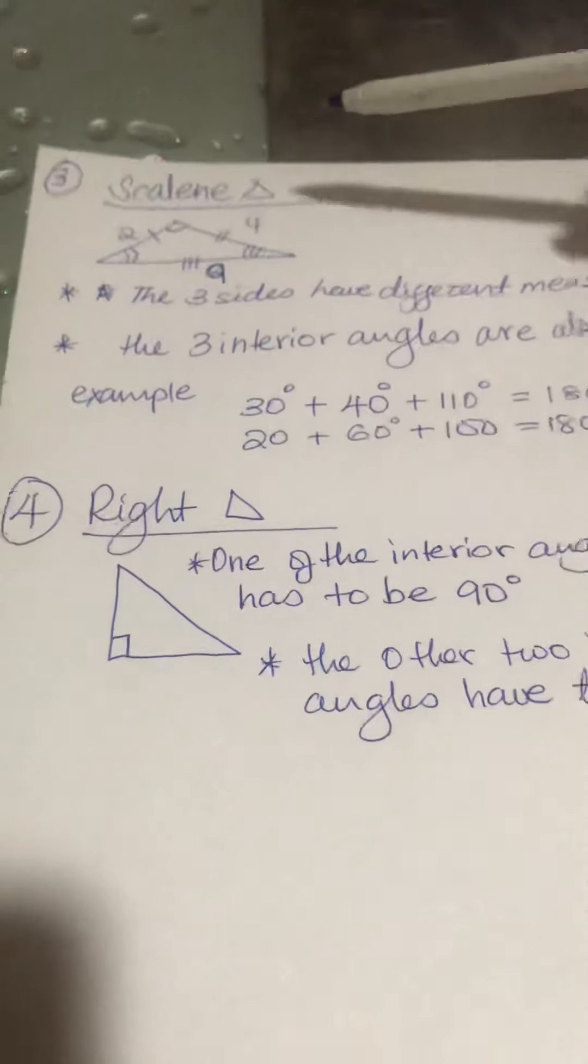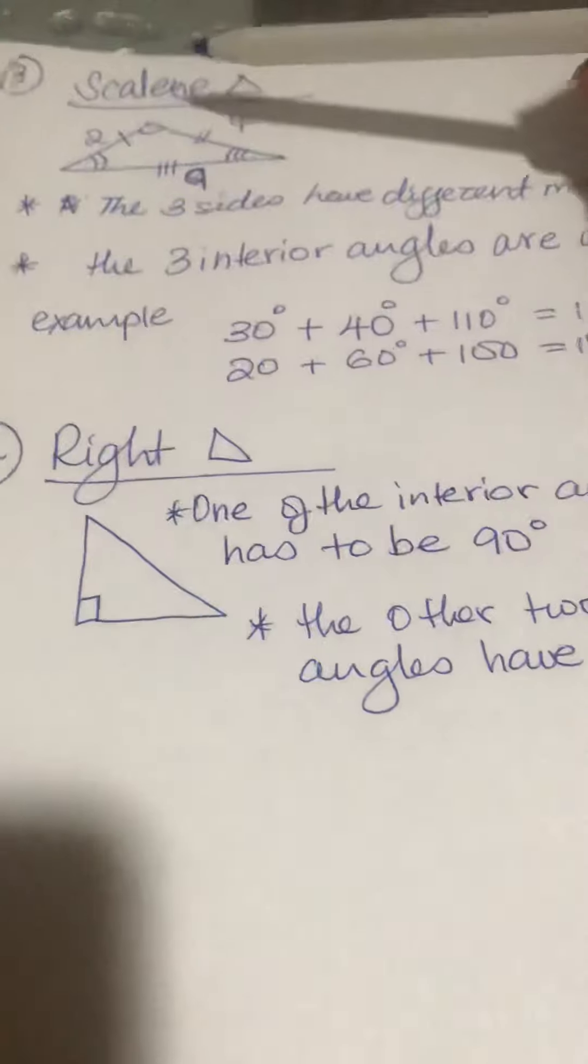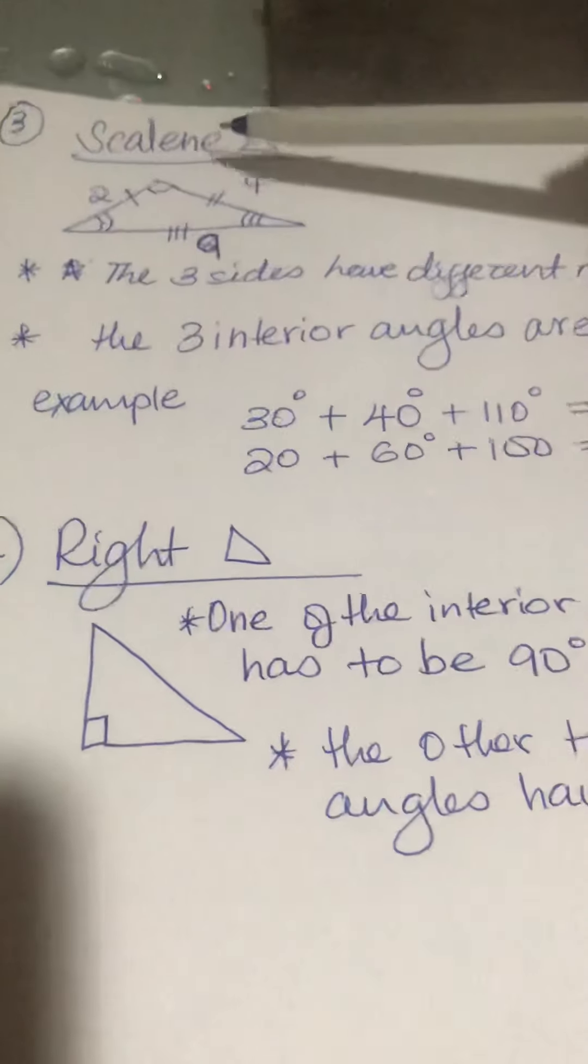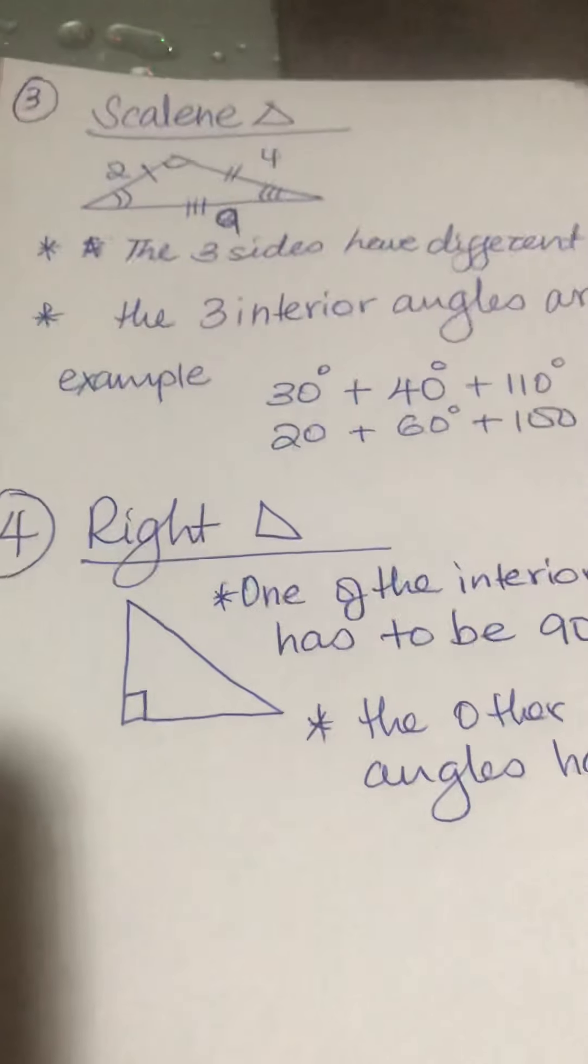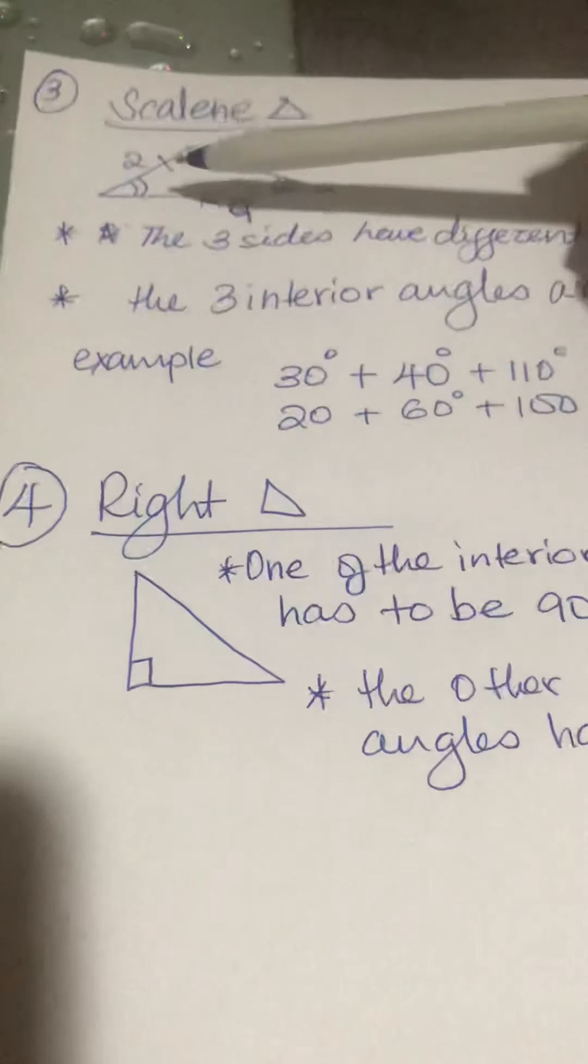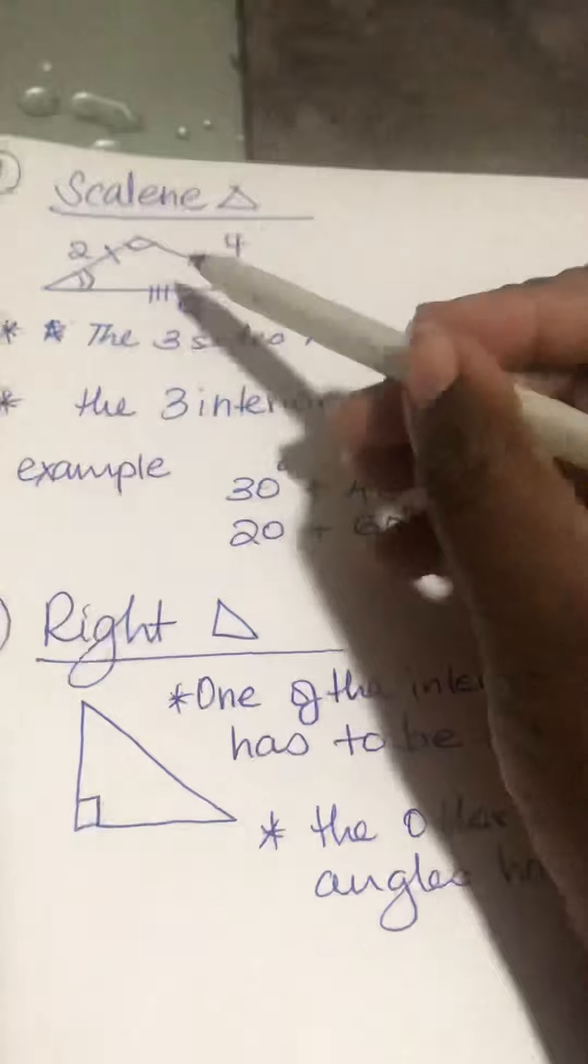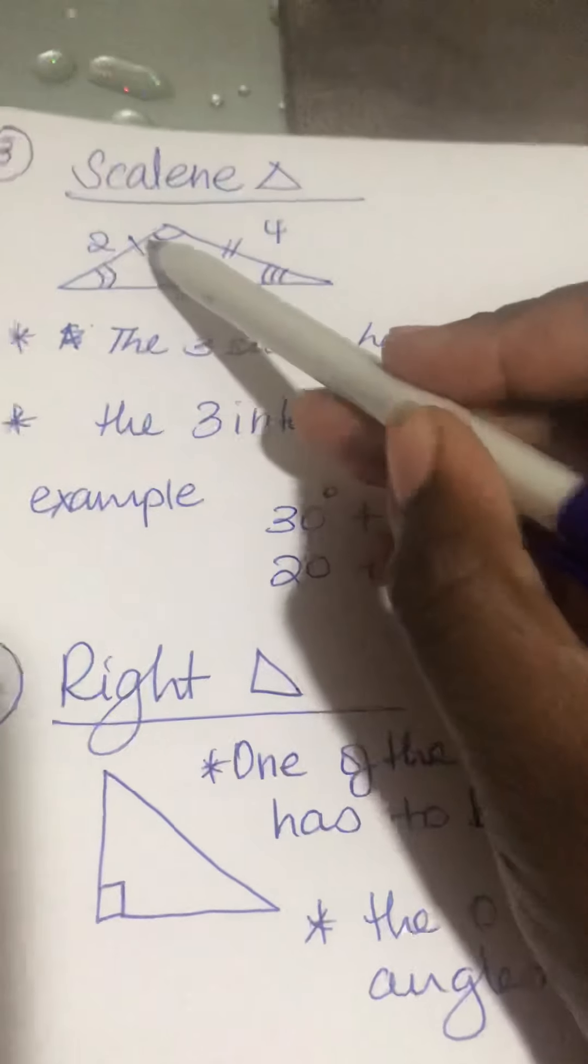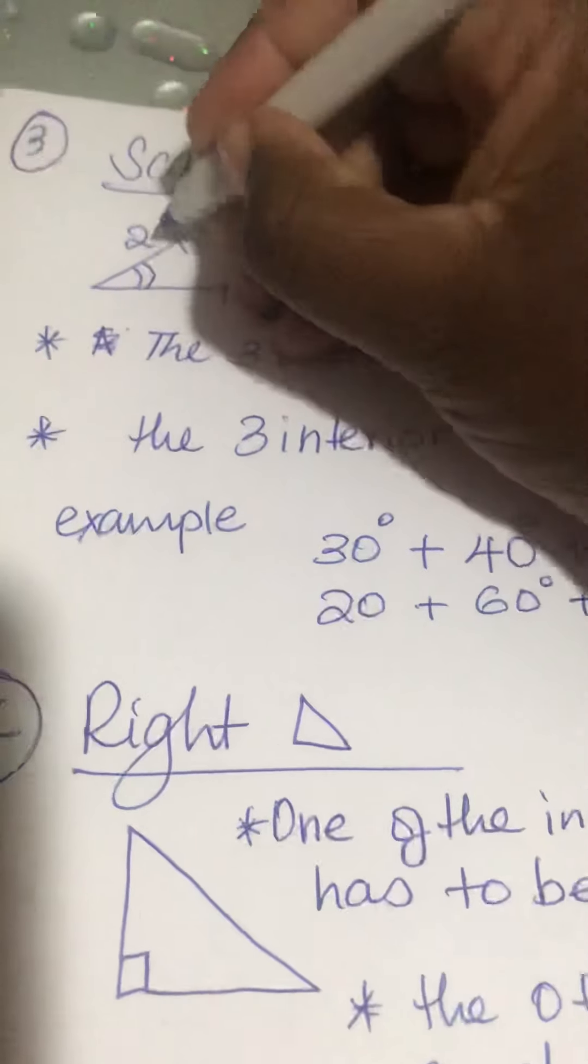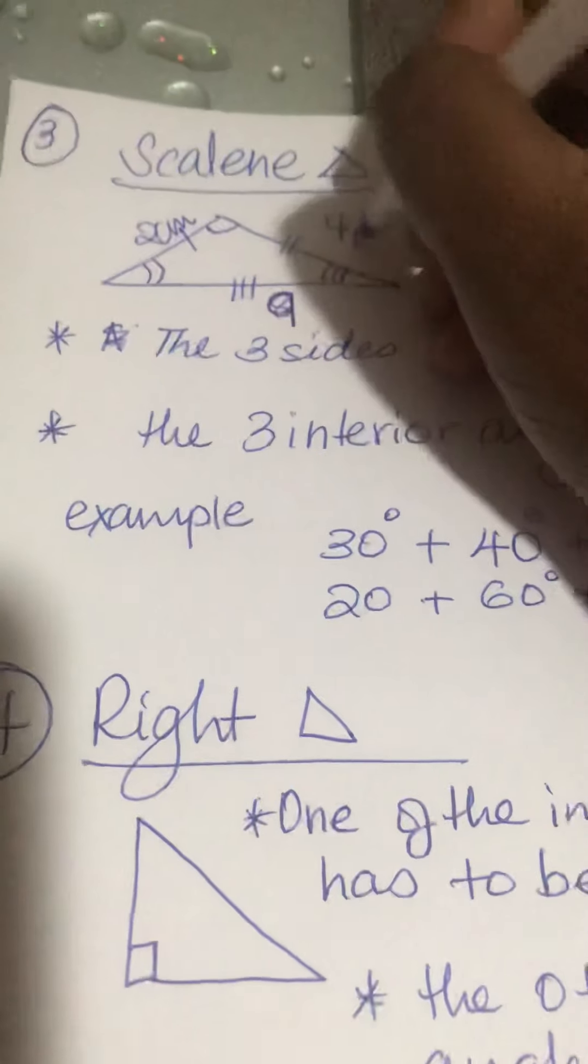Okay, now we do triangle 3, it's called a scalene triangle. A scalene triangle has three sides that are not the same. So if the three sides are not the same, remember to put units: centimeter, meter, or inches.